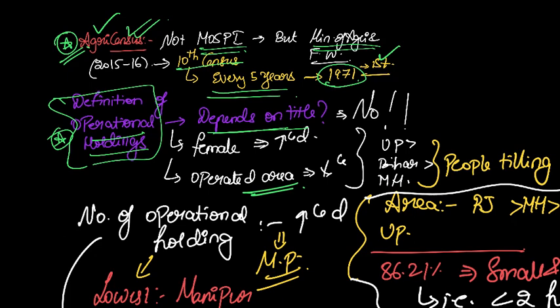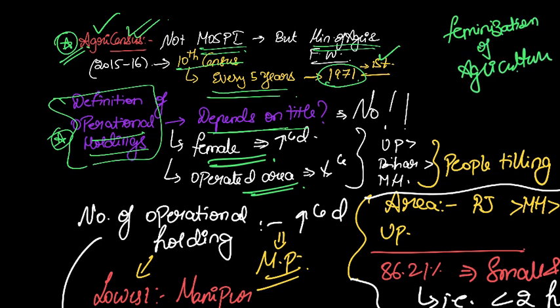So the first trend says that the total area which is under operation for agriculture is decreasing, but the amount of operational holdings in the name of females is increasing. So this trend implies feminization of agriculture. UPSC might ask a question that feminization of agriculture is increasing according to Agri Census 2015 - yes, that is true.